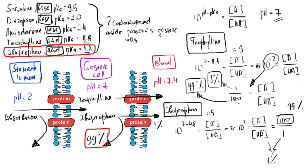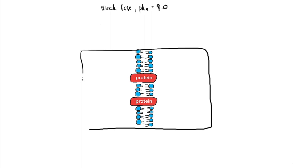This is the so-called ion-trapping phenomenon. Last example: assume we have a weak base drug with pKa equal to 8. We have two compartments separated by a lipid membrane. The left compartment has a volume of 2 liters and pH equal to 6. The right compartment has pH equal to 7. The drug has been introduced into this system.